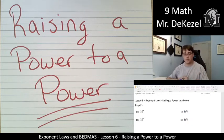And when we raise a power to a power here, we are going to multiply the exponents together. That is the rule. When you have a power of a power, you multiply.